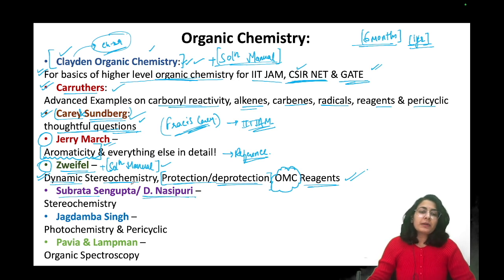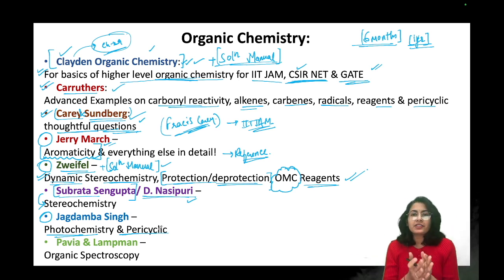Those who have completed Clayden can move onwards to higher level like Carruthers and Zweifel. Now Shubrodho Singh Gupta or Dean Asipuri, this is a stereochemistry book which I had bought while I was in BSc and Dean Asipuri PDF is available. You can get this book for stereochemistry. This is going to be good enough along with previous year questions. Jagdamba Singh is very good for photochemistry and pericyclic also. It is like an easy compilation of all these topics. Whatever we need to know about photochemistry is there. I would suggest you study pericyclic from Clayden and Carruthers both, but if you are understanding it from here, go with it, no problem.